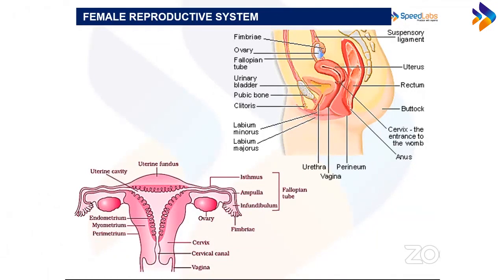Secondary sex organs are accessory structures that do not produce gametes but assist in other reproductive functions. These include the fallopian tube (also called the uterine tube), the uterus (the womb), the vagina (the birth canal), and the external genitalia.